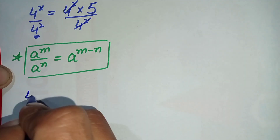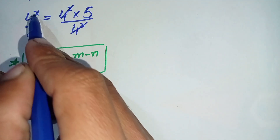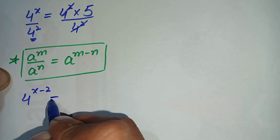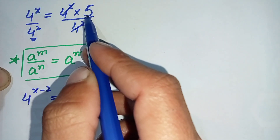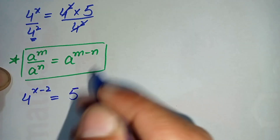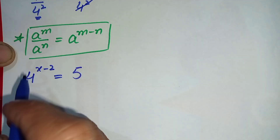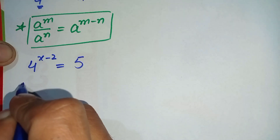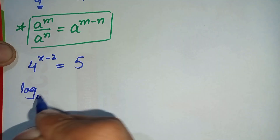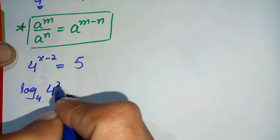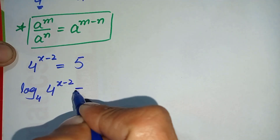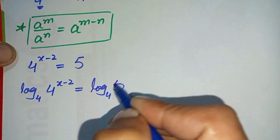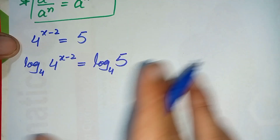Applying this division exponent property to the left-hand side, we write the base 4 once and subtract the powers, giving 4 raised to the power x minus 2. The right-hand side has only 5 remaining, so we get 4^(x−2) = 5. Now we take log with base 4 on both sides.